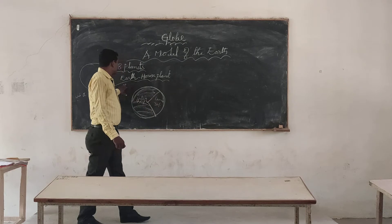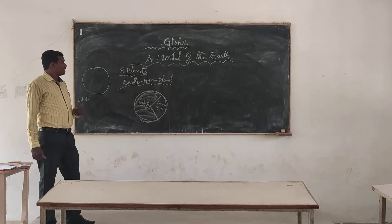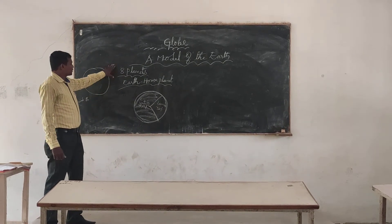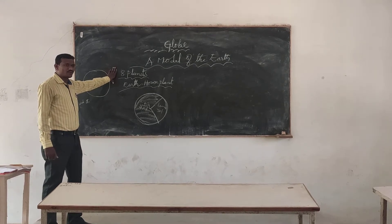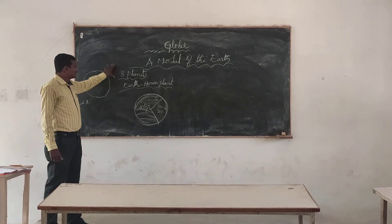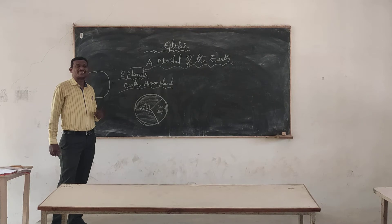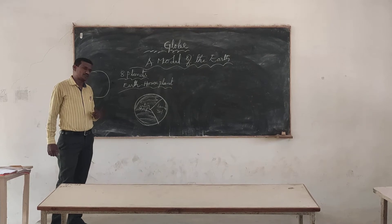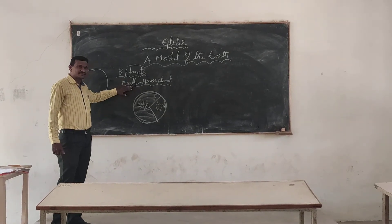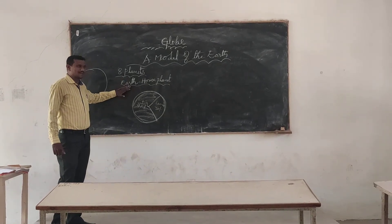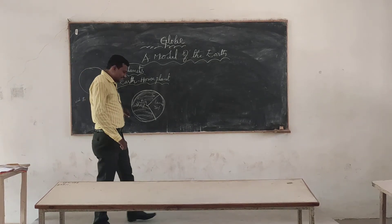There are eight planets in the solar system. Do you know, children? In the lower class we have discussed this. There are eight planets in the solar system. Which is our home planet? The home planet is our Earth. Earth is our home planet.